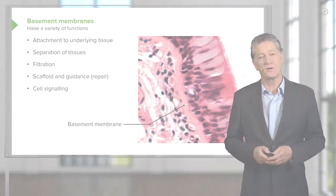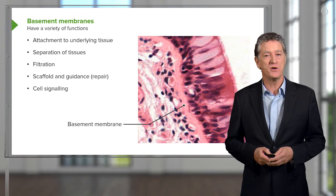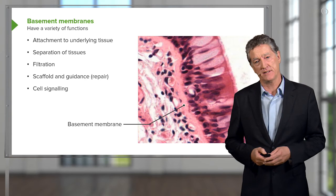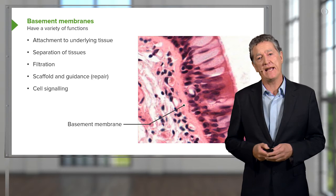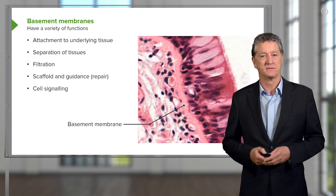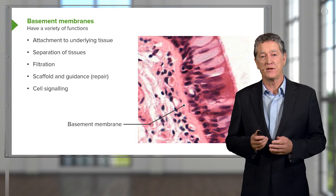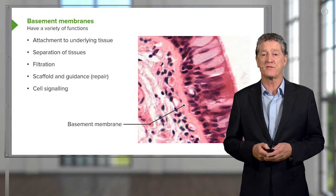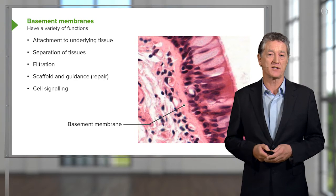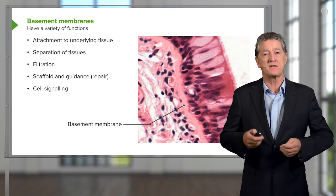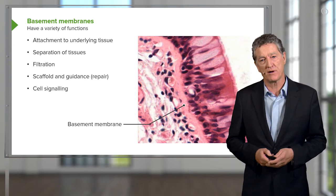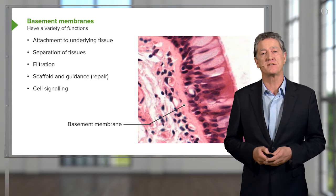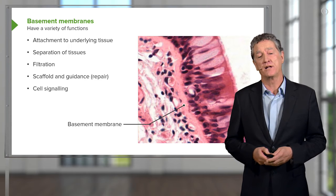In tissues like muscle and nerve, instead of using the word basal lamina, we use the word external lamina, because basal lamina usually only refers to the description of epithelia at the electron microscope level. I just tend to use the term basement membrane when referring to epithelia and when looking at epithelia with the light microscope.